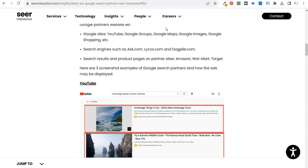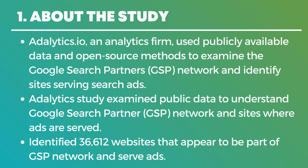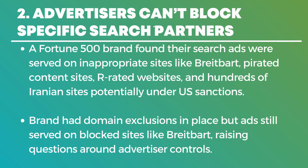The problem is if you're looking at your data, you can't actually see what specific websites your ads are running on — that was the big part of this Adalytics study. Adalytics used open source methods to find websites with Google Search Partners code and identified over 36,000 websites that appear to be part of the Google Search Partner network. One major reason they did this is because advertisers can't block specific search partners. They were working with a Fortune 500 brand that found their search ads were on different websites they specifically did not want — including Breitbart.com, which they had added to domain exclusions, but search partner ads still ran there.